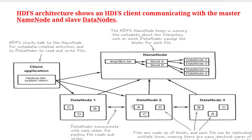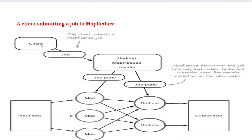Next is the HDFS architecture, which shows how an HDFS client communicates with the master node and slave nodes. The client application sends information to the NameNode and stores data in the DataNodes. Data is distributed as blocks — for example, block A and block B — and these blocks are replicated across other nodes. A file may be stored across blocks B, C, D randomly on different DataNodes. The DataNodes communicate with each other and also with the NameNode.